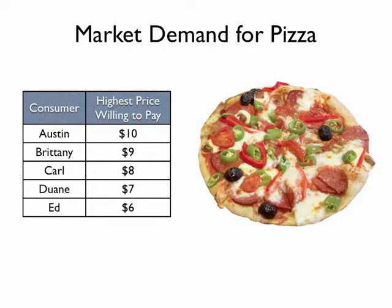Let's assume that we've conducted a little survey here in town, and we've asked consumers what the highest price they would be willing to pay for a pizza. We find that Austin, Brittany, Carl, Duane, and Ed have varying values that they place on pizza, ranging from Ed at $6 up to $10 for Austin. We're going to plot these values on a chart.